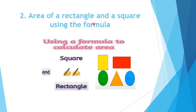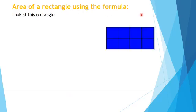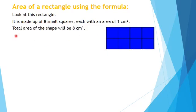Coming to the area of a rectangle and a square using the formula. Look at this rectangle. It is made up of 8 small squares, each with an area of 1 centimeter square. So the total area of the shape will be 8 centimeter square.